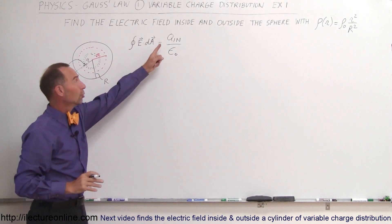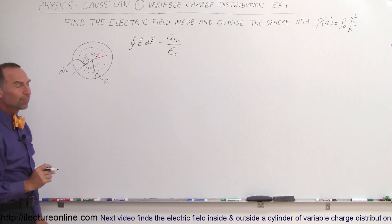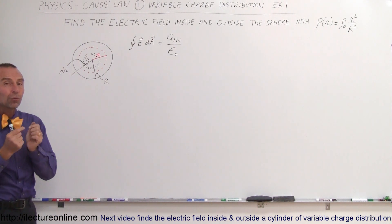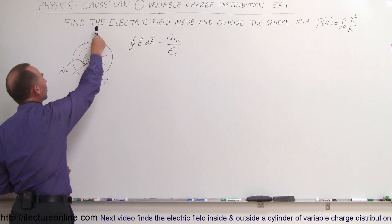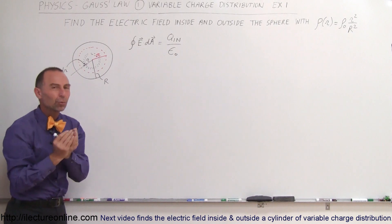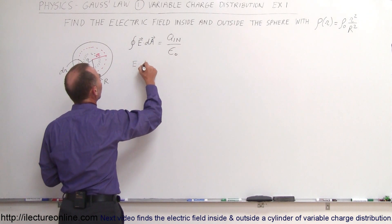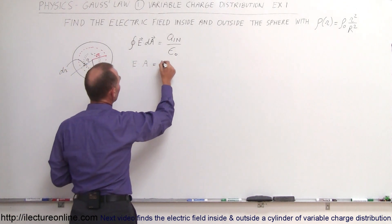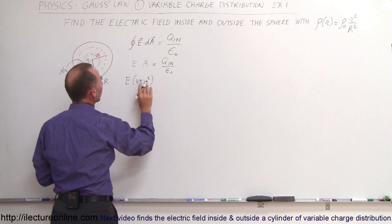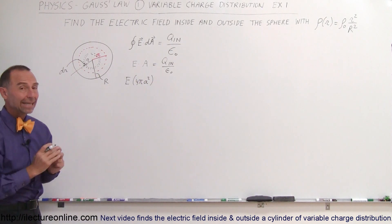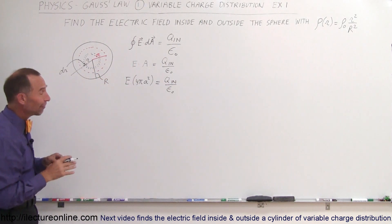Q_inside means all of the charge inside the Gaussian surface — a spherical shell drawn in red. Since there is perfect radial symmetry, the electric field has the same magnitude in all directions on the surface, pointing radially outward. So the left side becomes E times the total area of the Gaussian surface, which gives E times 4πA² equals Q_inside divided by ε₀. The only thing left is to find the charge inside.